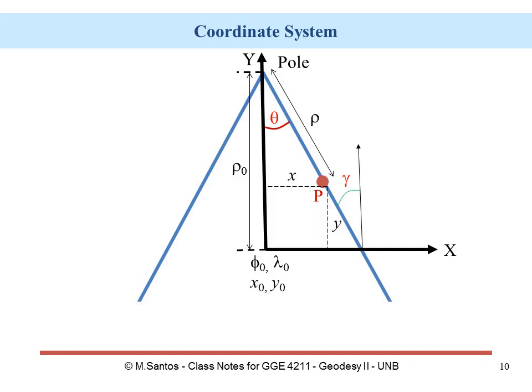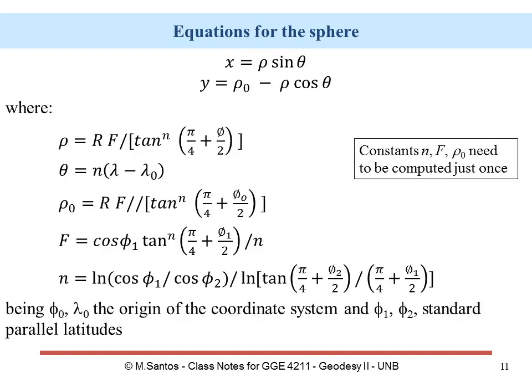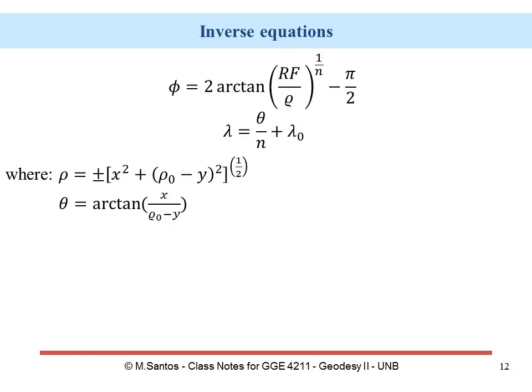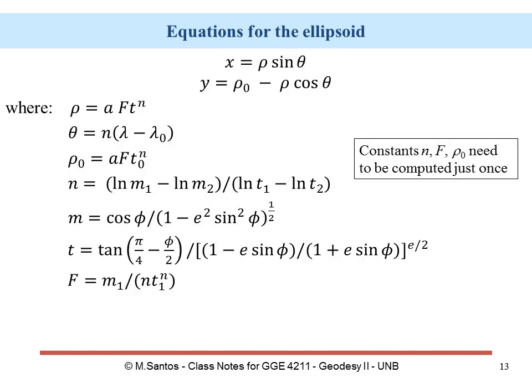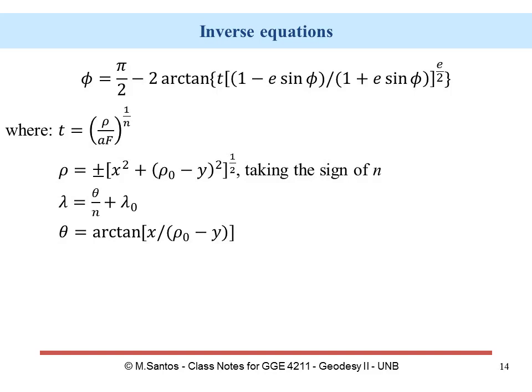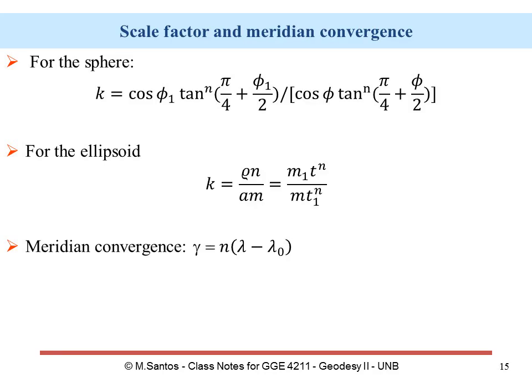The mapping equations for both the sphere and the ellipsoid are presented. The basic equations look the same: x equals rho times sine of theta, and y equals rho sub zero minus rho times cosine of theta. The element n is the so-called constant of the cone. We also have the inverse equations, and for the ellipsoid the subscripts one and two correspond to the two standard parallels. The scale factor can be computed for both sphere and ellipsoid, and the meridian convergence is angle gamma, which is essentially the same as angle theta.